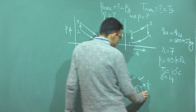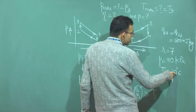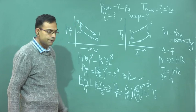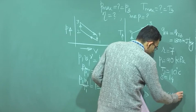You will get T₂/T₁, and since you know T₁ — in Kelvin, that is 273.15 + 10 — that gives T₂ = 616.6 Kelvin.